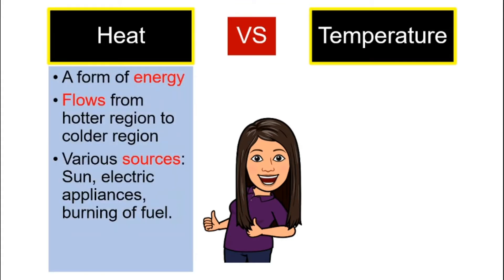Let us look at heat first. What is heat? Heat actually is a form of energy. If you remember from chapter 7, we have looked at various different types of energy, so heat is one of them. One very important concept in this whole chapter 9 is that you have to always remember that heat will flow from a hotter region to a colder region — from hot to cold. It is very important that you remember this concept.